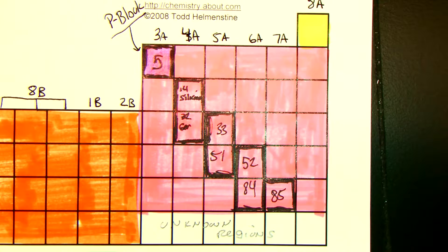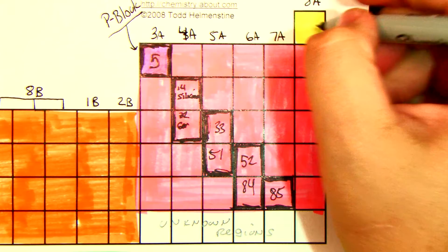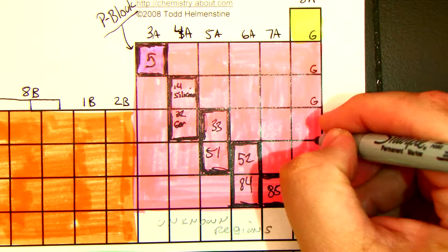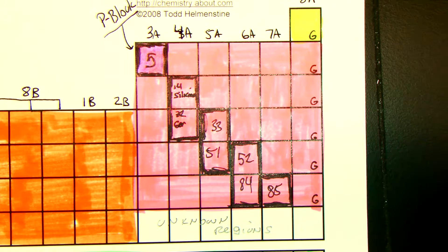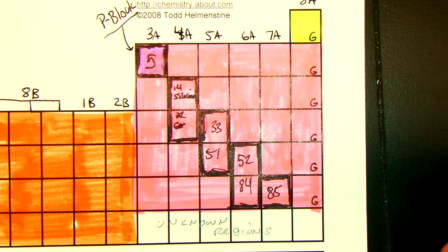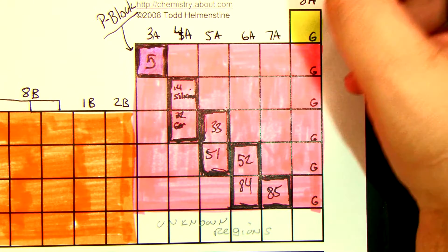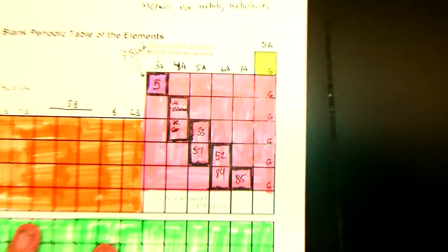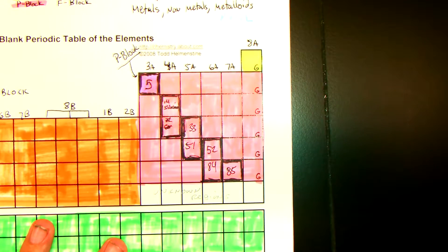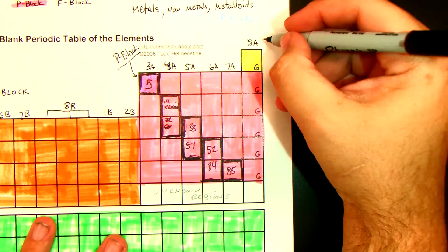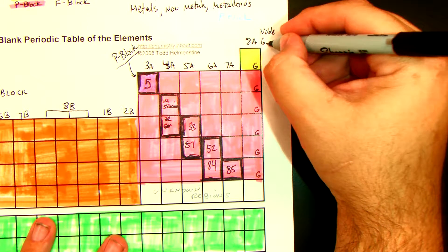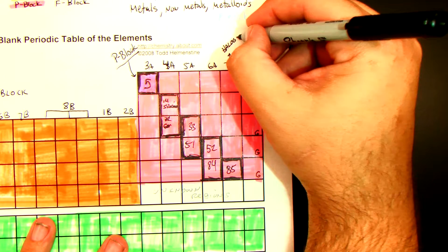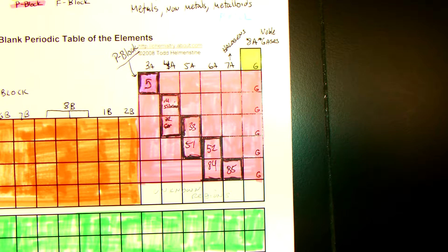One thing I want you to put in here: for group 8A, put a G in all the boxes in the P-block and in helium, because they're gases. These are your noble gases. And 7A are called your halogens — they have special names. So 7A are halogens and 8A are noble gases.